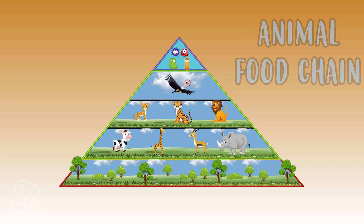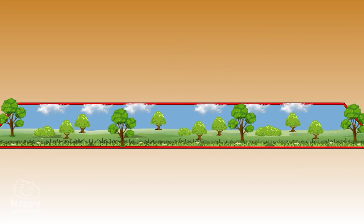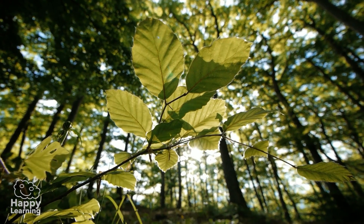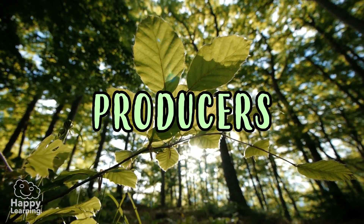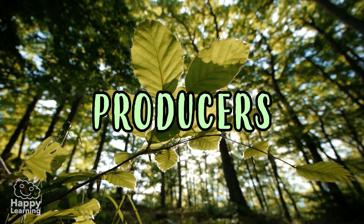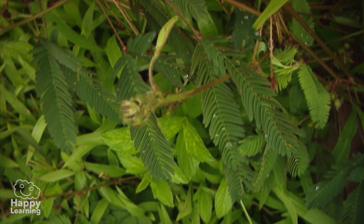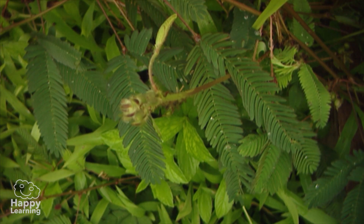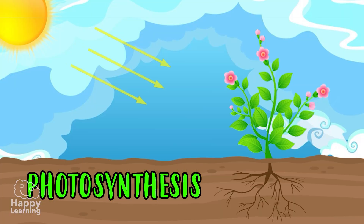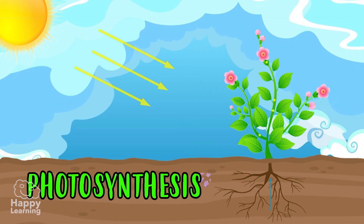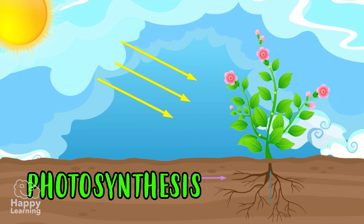Fruit and vegetables are at the bottom of the Trophic Pyramid. These are called primary producers as they can make their own food. They do this through a process called photosynthesis, which is a combination of the sun's energy with both water and nutrients obtained from the soil.